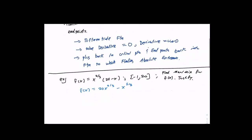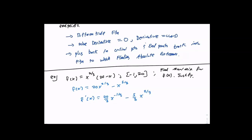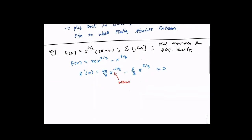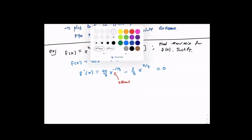I get 40 over 3 times x to the negative one-third minus 5 over 3 times x to the two-thirds. And of course, the idea is that we do want to set this equal to zero. Now this one is going to be a bit different — it has a negative power and fractional powers, so the question is how do I handle this?